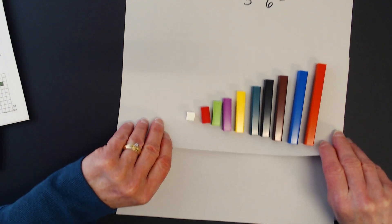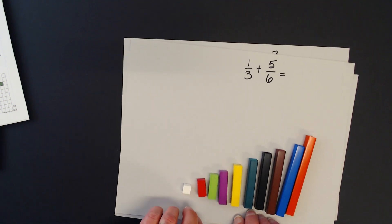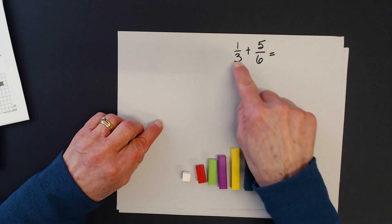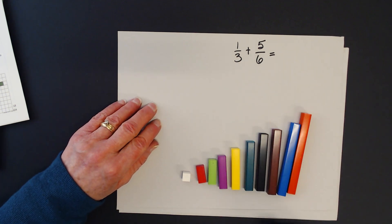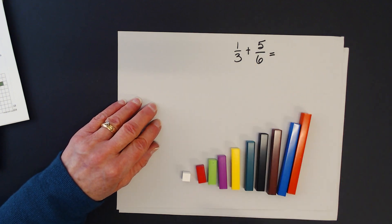So I have an expression here that we are going to work with, and this expression is 1/3 plus 5/6. We know that the denominators are related because one of the denominators is a multiple of the other one.